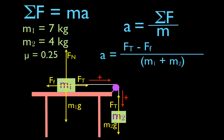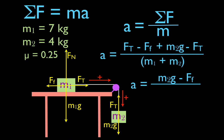For mass M2, which moves along the y-axis, there are two forces: M2g pointing down, which is positive, so we write plus M2g, and the tension force Ft pointing up, which is negative, so we write minus Ft. Notice that for M1 we have plus Ft and for M2 we have minus Ft. Because this is an inelastic string, these two tension forces are equal in magnitude and opposite in direction, so they cancel each other out.